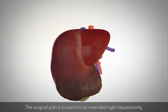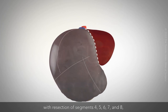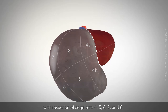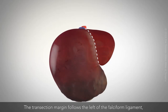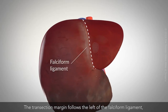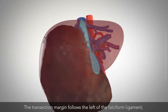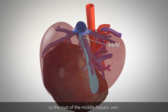The surgical plan is to perform an extended right hepatectomy with resection of segments 4, 5, 6, 7, and 8. The transection margin follows the left of the falciform ligament to the root of the middle hepatic vein.